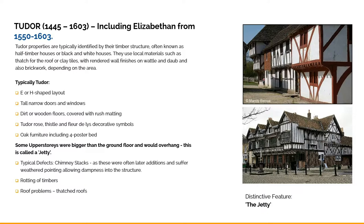Originally the chimney may have just been a hole in a thatched roof or in the gable ends of the property. At the time, the chimney was quite a modern innovation. Because of the style of the buildings, the height and design of the roofs can be awkward for maintenance, and often scaffolding, a tower or cherry-picker is needed to access the higher levels of the roof safely, which can be expensive. Other common issues include the deterioration and rotting of timber, which can be costly as these are normally major structural components.